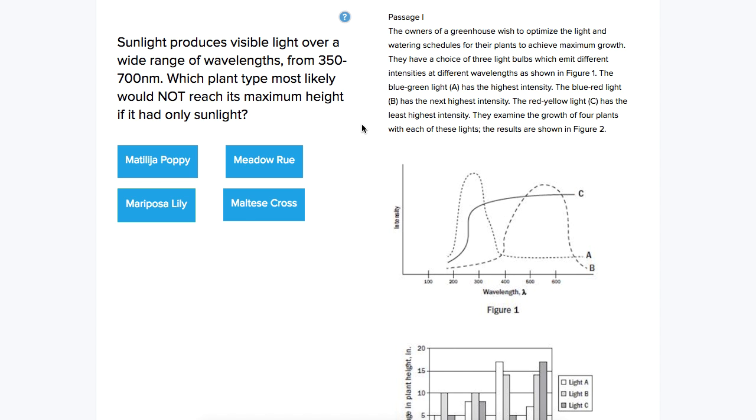We're looking at an ACT science question here. Sunlight produces visible light over a wide range of wavelengths, from 350 to 700 nm. Which plant type most likely would not reach its maximum height if it had only sunlight?